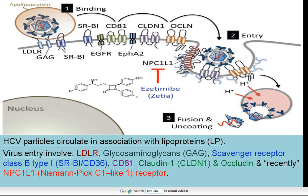The HCV particles circulate in association with lipoproteins, and thus the binding and entry into hepatic liver cells involves several lipoprotein receptors, including the LDL receptor, glycosaminoglycan receptors, scavenger receptor class B type 1, CD81 which binds to the envelope E2 receptor on the virion, claudin, occludin, and the recently discovered Niemann-Pick C1-like-1 receptor.